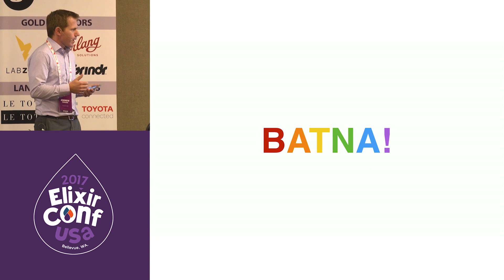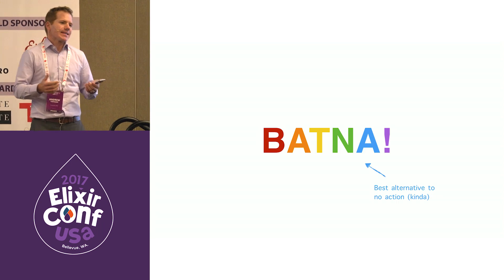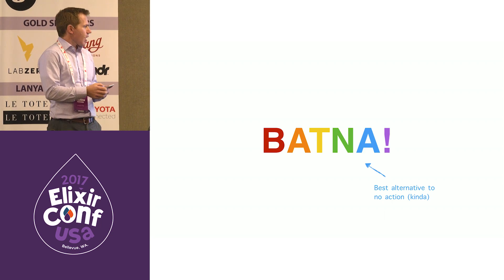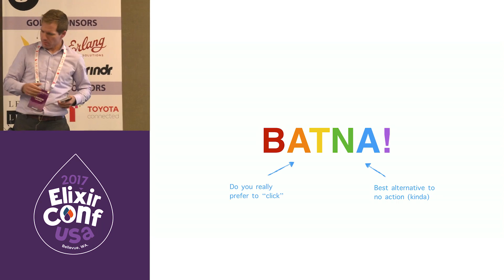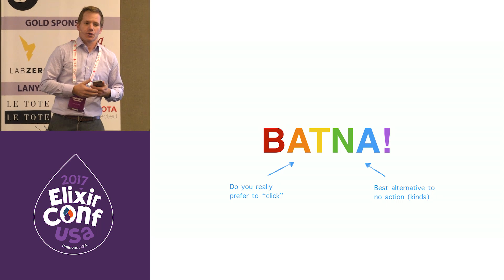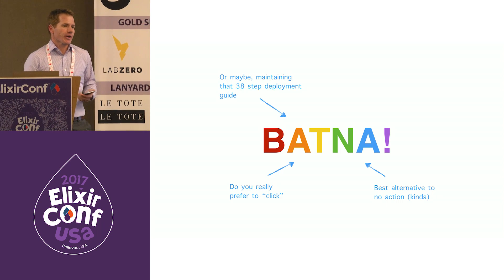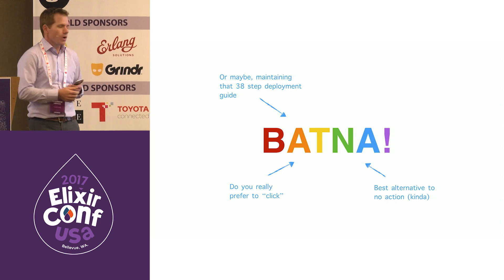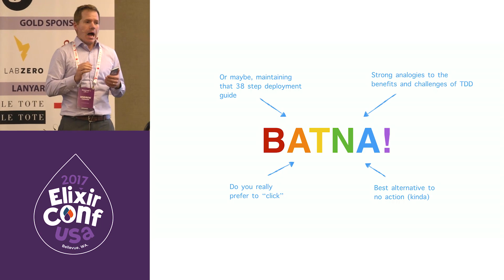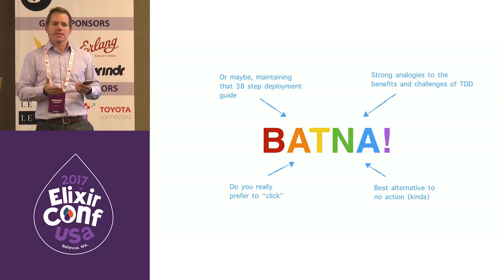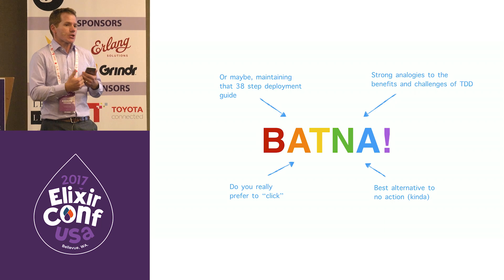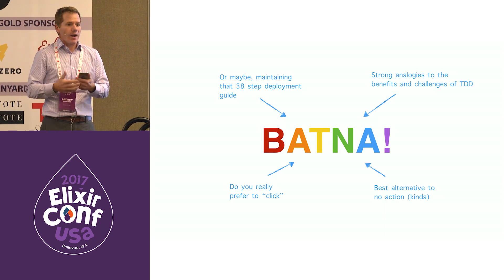In negotiations there's this thing called BATNA — the best alternative to doing nothing. So if you're not automating, what is the alternative? Do you really want to maintain your 38-step deployment guide for how you move things onto a new server? This aligns nicely with the benefits and challenges of test-driven development. You might be an excellent developer and think TDD is easy, but it actually takes practice. The same thing with automation and writing these scripts — just because you're good at development doesn't mean that ports over nicely to writing automated scripts.